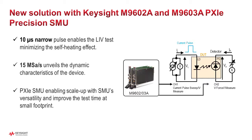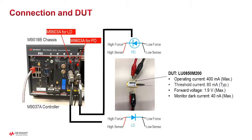A maximum of 15 mega samples per second sampling rate enables the dynamic characteristics of the device to be unveiled. Let's demonstrate the LIV test by applying a current pulse to the laser diode and detect the current on the photodiode of this device with two SMUs.